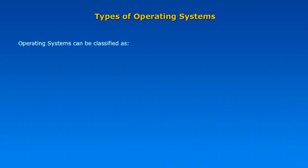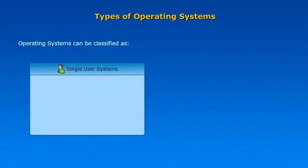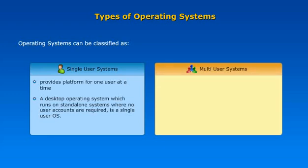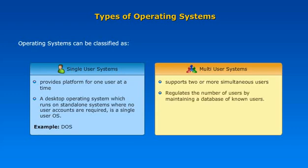Operating systems can be classified as single-user systems and multi-user systems. Single-user systems provide a platform for one user at a time; a desktop OS running on stand-alone systems where no user accounts are required is a single-user operating system — an example is DOS. Multi-user systems support two or more simultaneous users, regulate the number of users by maintaining a database of known users, and can be called time-sharing systems — an example is Unix.